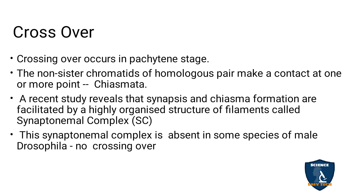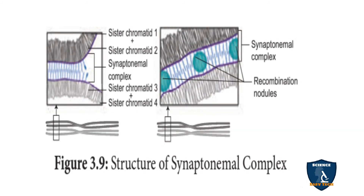The synaptonemal complex is absent in male Drosophila because there is no crossing over — due to closely linked genes, there is no opportunity for crossing over. Remember, they may ask this in one mark. The diagram shows the structure of the synaptonemal complex — how synapsis and the chiasma come in contact with each other and form the complex, also visible in the recombinant.